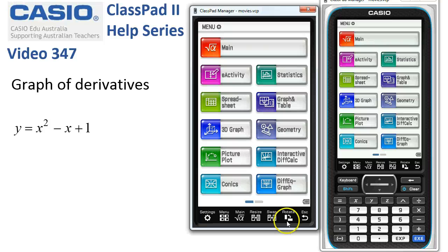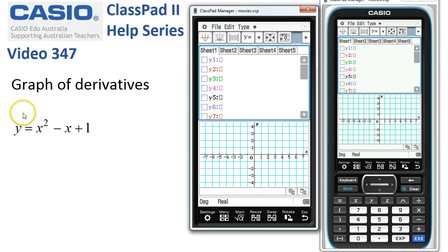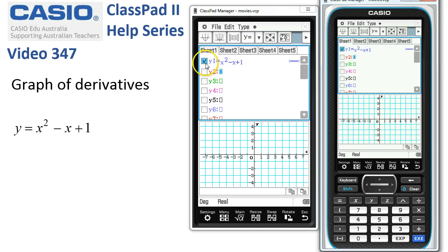Graphing derivatives in the Graph and Table application. We'll head into Graph and Table and enter the parabola here. So we've got x squared minus x plus 1.